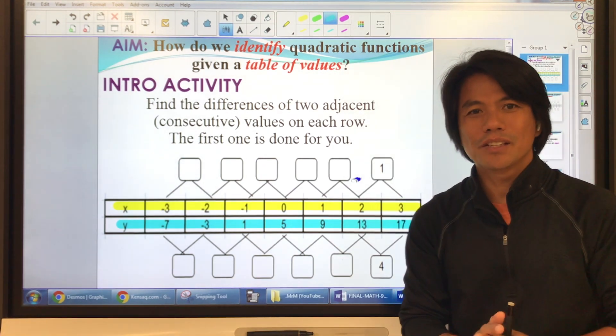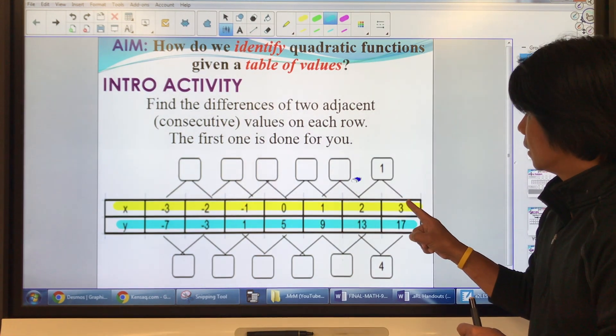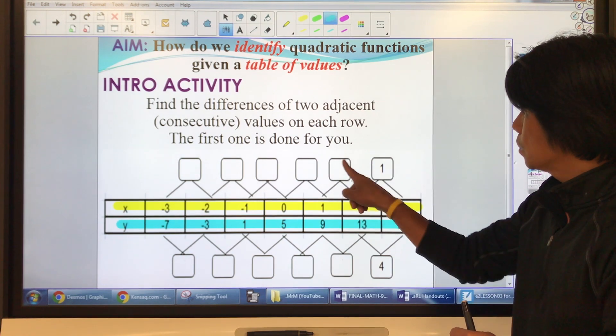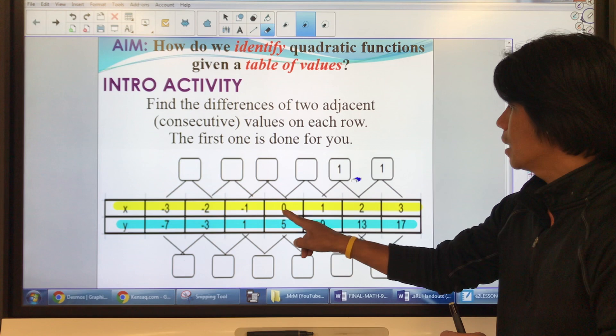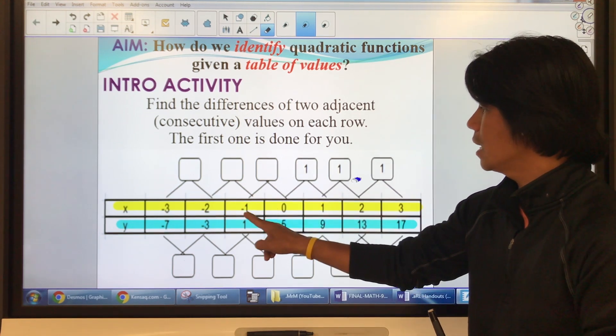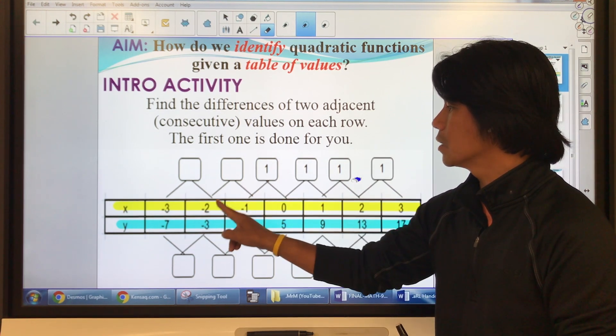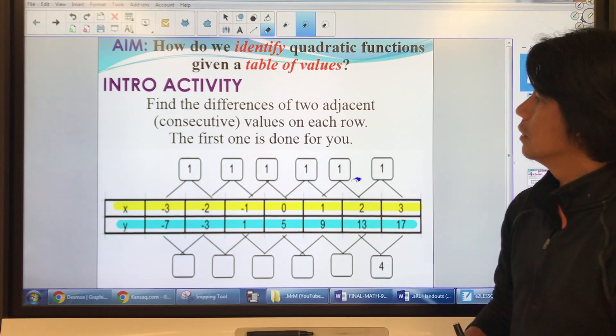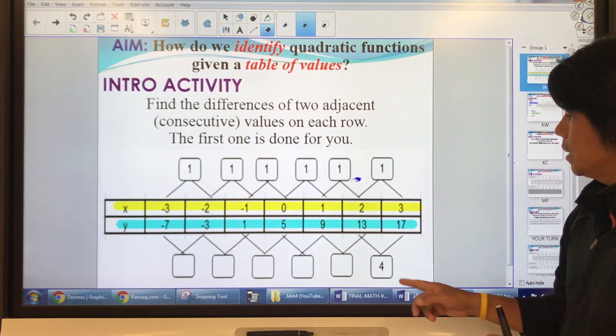Let's check your answers. How did I get this one? 3 minus 2 is 1, 2 minus 1 is 1, 1 minus 0 is 1, 0 minus negative 1 is 1 also, negative 1 minus negative 2 is 1, and this is 1. Notice that all the numbers here are the same. How about here?